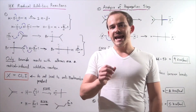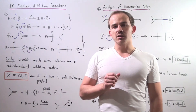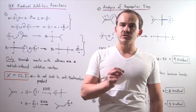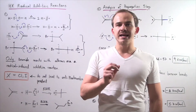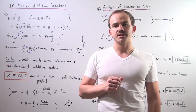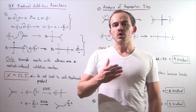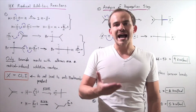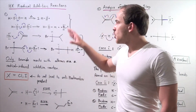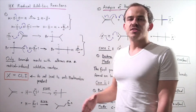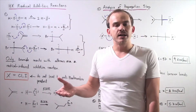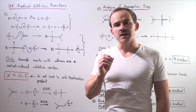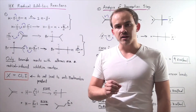Recall that if we take an HBr molecule and mix it with an asymmetrical alkyne in the presence of peroxide, we will induce a radical reaction that will lead to an anti-Markovnikov, less substituted product.